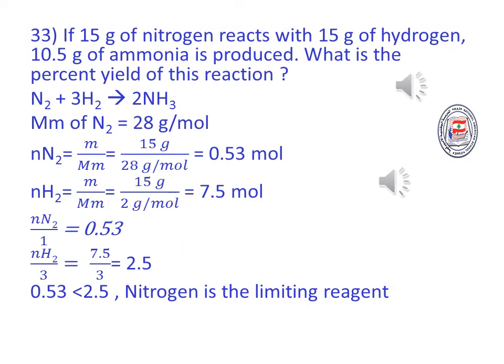Number 33: If 15 grams of nitrogen reacts with 15 grams of hydrogen, 10.5 grams of ammonia is produced. What is the percent yield of this reaction? Start with finding the number of moles of nitrogen, which is mass divided by molar mass, equal 15 grams divided by 28 grams, equals 0.53 moles.